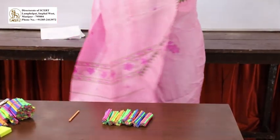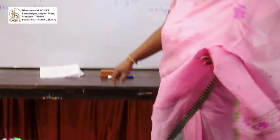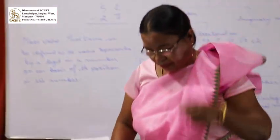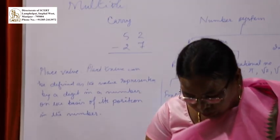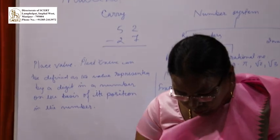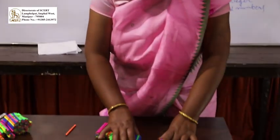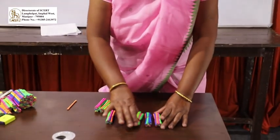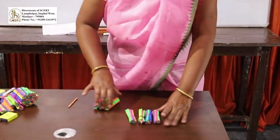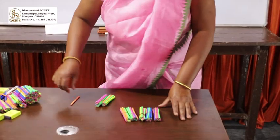Now, 52 minus 27. We will put on the objects: 10, 20, 30, 40, 50 — representing 52 with bundles and loose units.